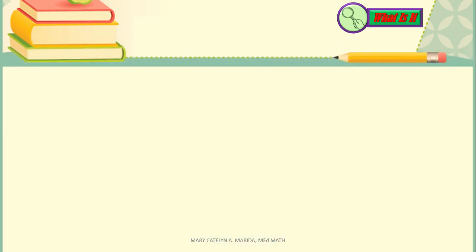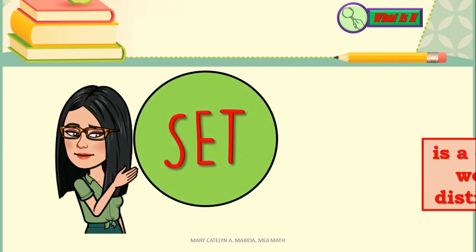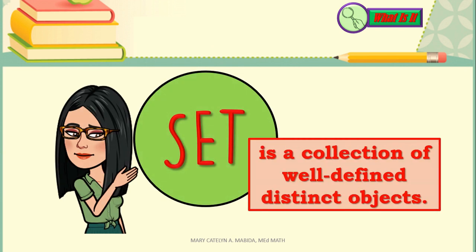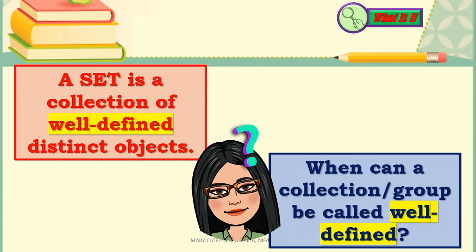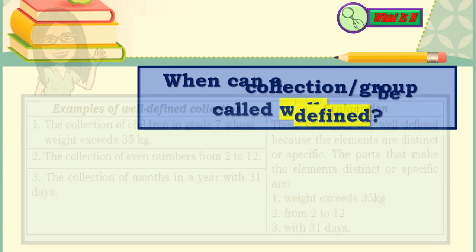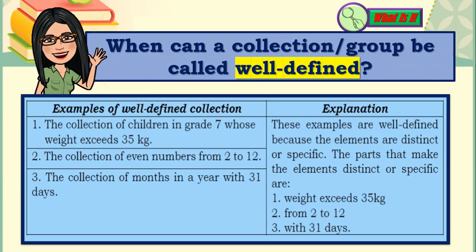We have been talking about well-defined. A set is a collection of well-defined distinct objects. When can a collection or group be called well-defined? Collections or groups are well-defined if elements are distinct or specific, meaning each of the elements are different and are related to each other. Here is a table which contains examples of well-defined collections.